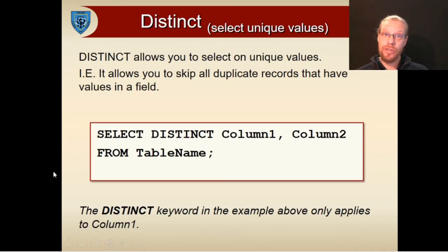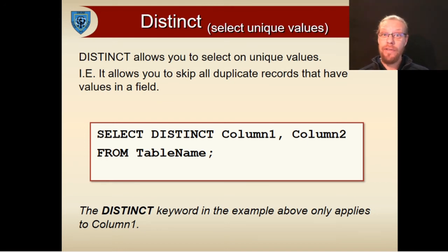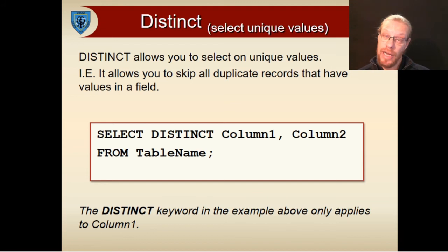In some circumstances, you may need to ensure that only unique values are selected. The DISTINCT keyword is applied to a column to indicate that only records with unique values in that column should be used. Remember that any values in primary keys are unique by definition, so you wouldn't use this with primary keys. The DISTINCT keyword is useful when you need to find unique values in columns that may legitimately contain data that have the same values.